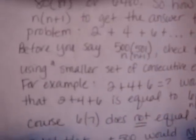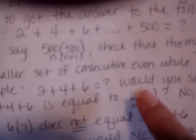Now, before you say 500 times 501, because I know some of you guys are going to say that, check that theory by using a smaller set of consecutive even whole numbers. For example, if you said 2 plus 4 plus 6, would you say that was equal to 6 times 7?